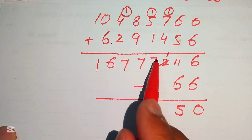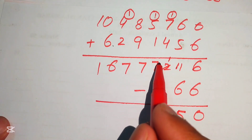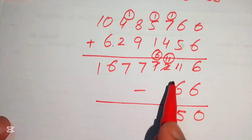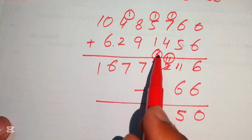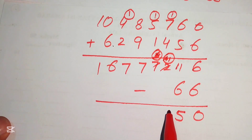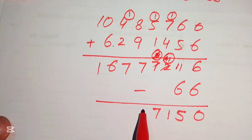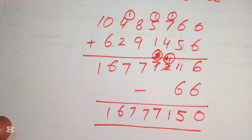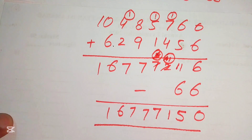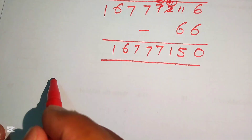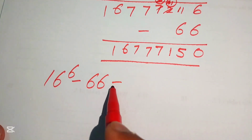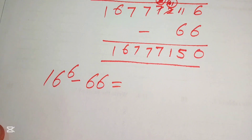After carrying and borrowing through the subtraction, we write down the digits: 1, 7, 7, 7, and so on, keeping the remaining digits unchanged. This gives our final answer. Finally, we write the original expression: 16 to the power of 6 minus 66 equals this simplified form.